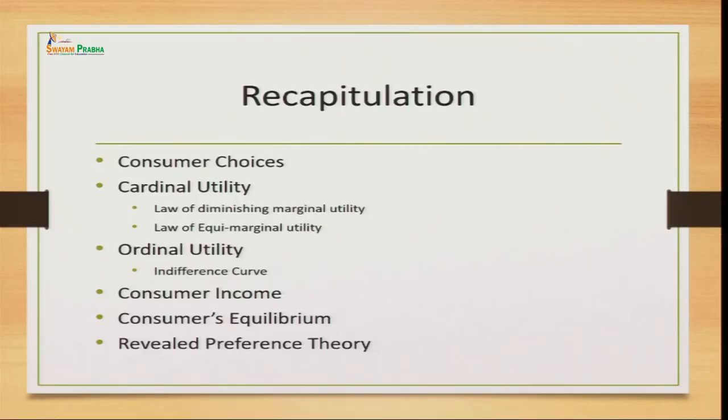Before we talk about today's class, let us look at the topics covered in our previous session. We talked about consumer choices and their behavior — how consumers make their choices and how they behave in the market. We discussed their taste and preferences, their choices, where we covered the cardinal concept as well as ordinal concept of utility. Marshall gave this cardinal concept, saying that utility can be measured and is the satisfaction a consumer derives from the consumption of a commodity. This cardinal concept is based on two laws: the law of diminishing marginal utility and the law of equimarginal utility.